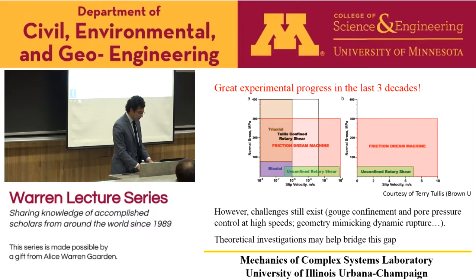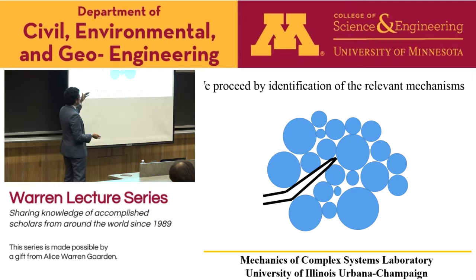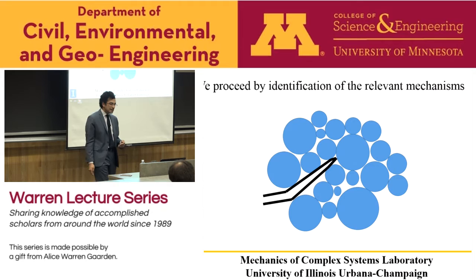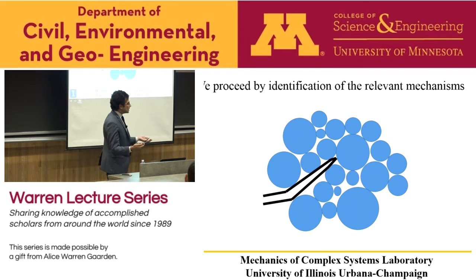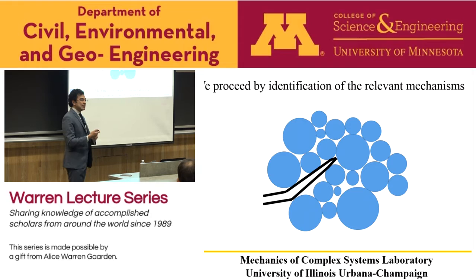This is a schematic where we have granular material confined, and a crack or shear band propagating through it. The theory I'm going to discuss postulates that when granular material deforms, it generates plastic strain. This plastic strain is not distributed across all contacts but is concentrated in a few sparse contacts that are actively slipping at a given instant of time.